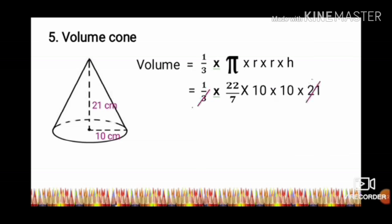Simplify: 21 divided by 3 equals 7. 7 and 7 cancel to 1. So, 22 times 10 times 10 equals 2200 cubic centimeters.